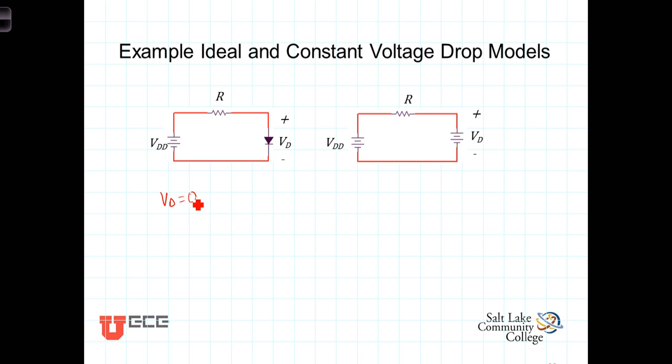So in this case, we would calculate the current as, call it I sub D. I sub D would equal VDD minus the voltage drop across there, which is 0, divided by R.